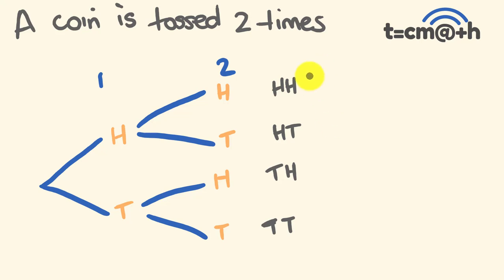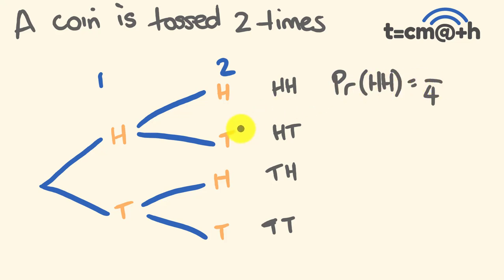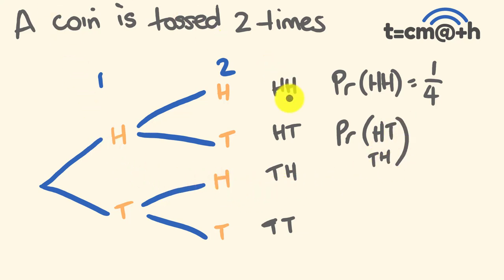We can now use this to work out some different probabilities. Not only can we list the possible results, we can start asking: what's the probability of getting two heads? There are four possible outcomes altogether, and only one of them contains two heads, so it's a one in four chance. What about the probability of getting a head and a tail, not necessarily in order? You could get a head then a tail, or a tail then a head — that's two desirable outcomes out of a total of four.